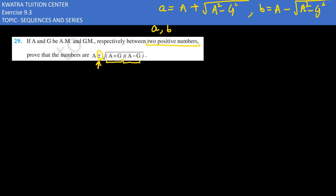So you have small a and small b. Arithmetic mean is equal to A plus b over 2, and GM is equal to root ab.